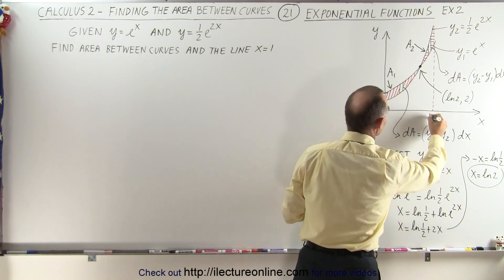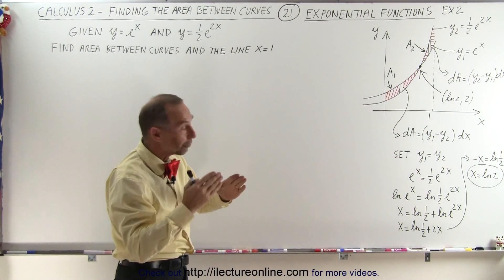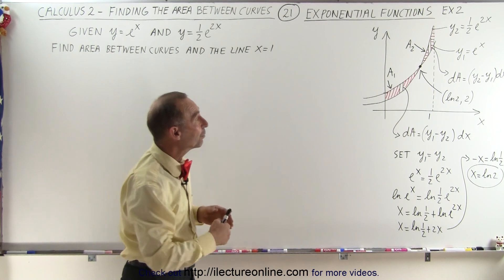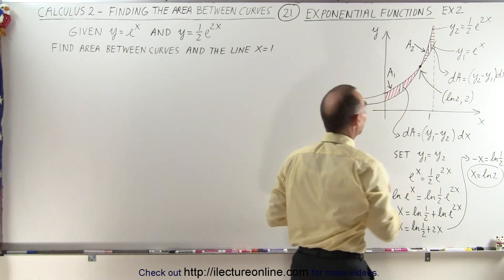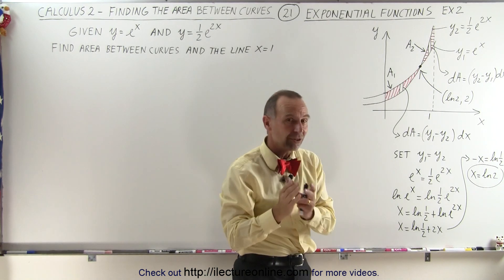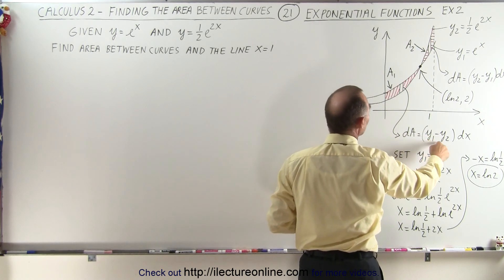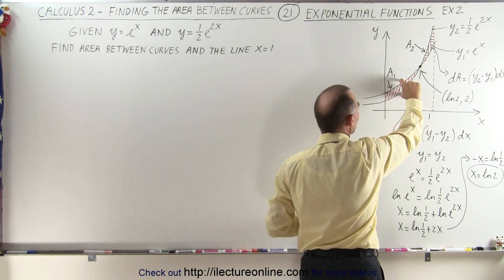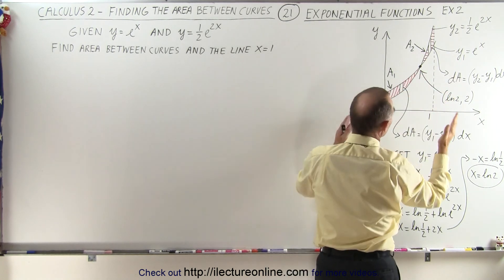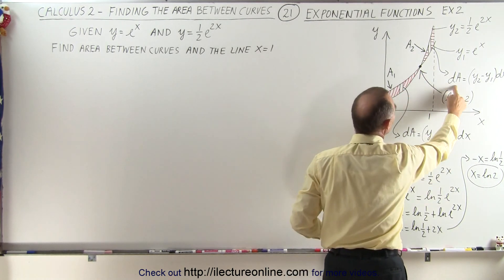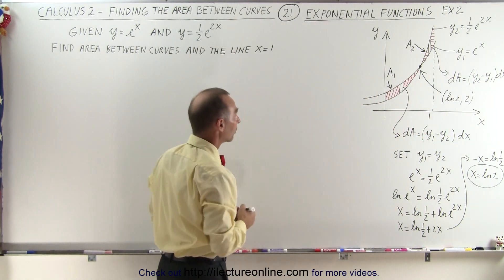It's also bounded by the line x equals 1. Notice that the two functions cross over, which means we're going to have two areas, A1 and A2. We're going to have to integrate twice because the dA's are going to be different. The dA for the first area is y1 minus y2 times dx, and for the second area, since they crossed over, the dA is y2 minus y1 times dx.